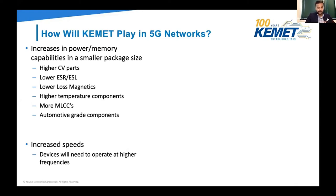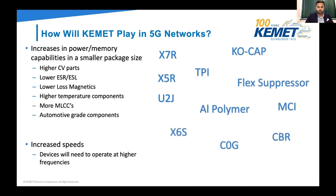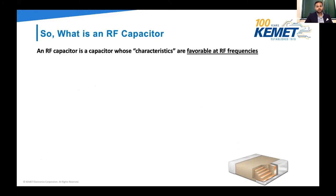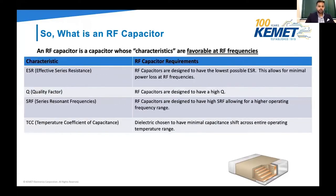The devices will need to operate at higher frequencies, so let's talk about an RF capacitor product. An RF capacitor is a capacitor whose characteristics are favorable at RF frequencies. Key characteristics include ESR — RF capacitors are designed to have the lowest possible ESR, which allows for minimal power loss at RF frequencies. Other important characteristics are SRF, the series resonant frequency, which allows for a higher operating frequency range, and the temperature coefficient, which ensures minimal capacitance shift across the operating temperature range.